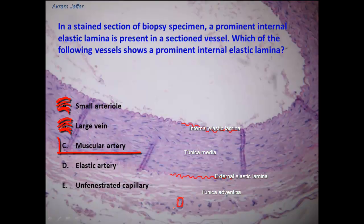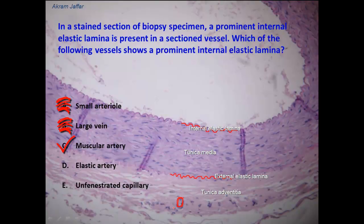Muscular artery — and this is the correct answer. A muscular artery, or a distributing artery, contains both an internal and external elastic lamina. Most of the arteries of the body are of the muscular type, and they contain internal and external elastic lamina.